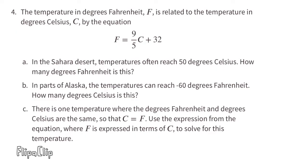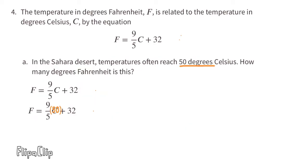Number 4: The temperature in degrees Fahrenheit, F, is related to the temperature in degrees Celsius, C, by the equation F equals nine-fifths C plus 32. Part A: In the Sahara Desert, temperatures often reach 50 degrees Celsius. How many degrees Fahrenheit is this? The temperature is 50 degrees Celsius, so I need to substitute C with the value of 50. Now the equation reads F equals nine-fifths times 50 plus 32. We can cross-cancel: 5 goes into 50 ten times, and 5 goes into 5 once.